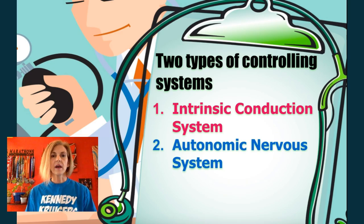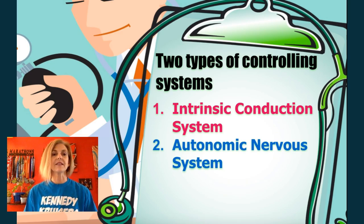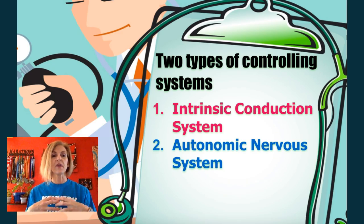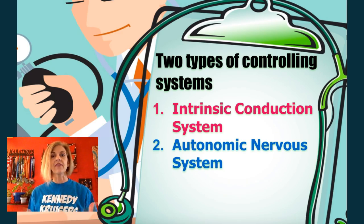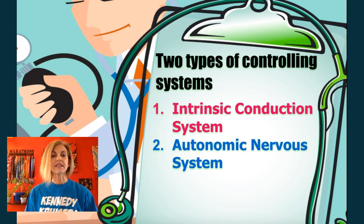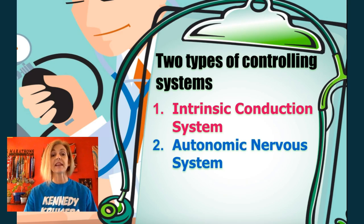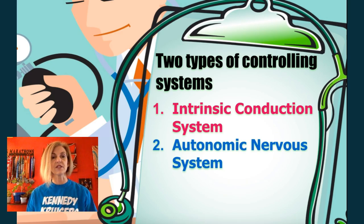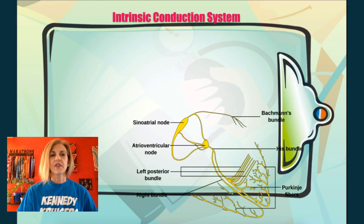When it comes to controlling your heart rate, there are two different systems that play a role in that control. One is intrinsic, found within the heart — that's the nodal system — and one is extrinsic, found outside of the heart — that's the autonomic nervous system. Today I'm just going to talk about the nodal system. You'll remember the autonomic nervous system: sympathetic speeds it up (fight or flight) and parasympathetic returns it to normal (rest and digest).